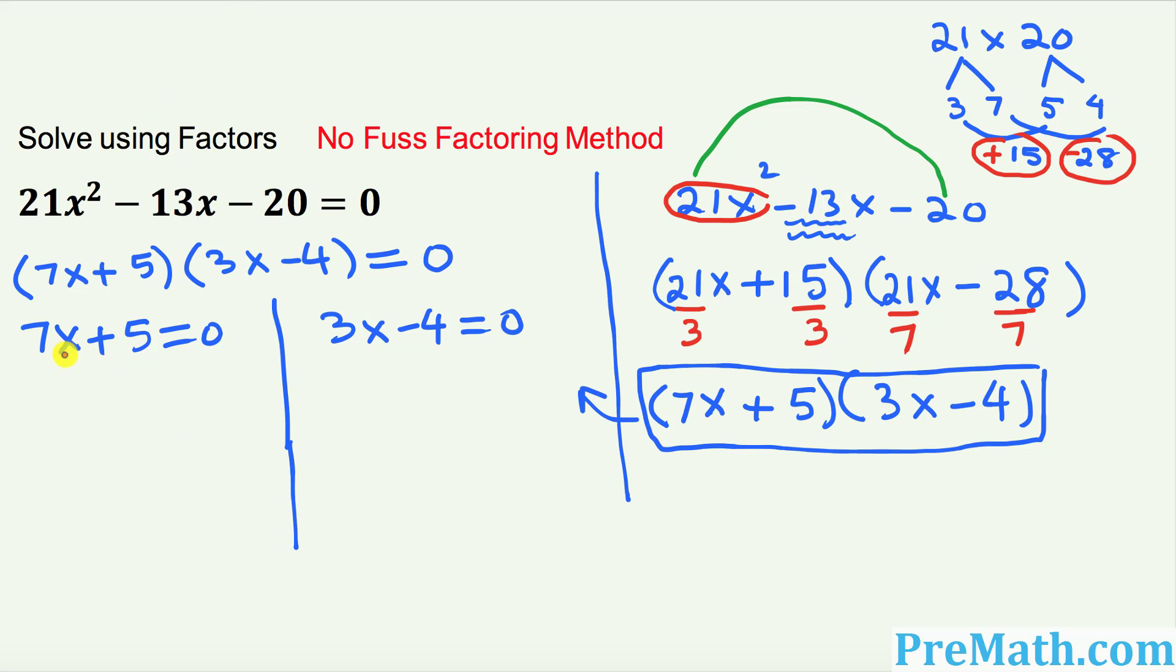So let's go ahead and solve these two equations for x. That means we can isolate x. So subtract 5 from both sides. This cancels out. So we got 7x equal to negative 5. I want you to divide by 7 on both sides. So this 7 and 7 is gone. So x equal to negative 5 over 7. So this is one of our solutions to this given quadratic equation.